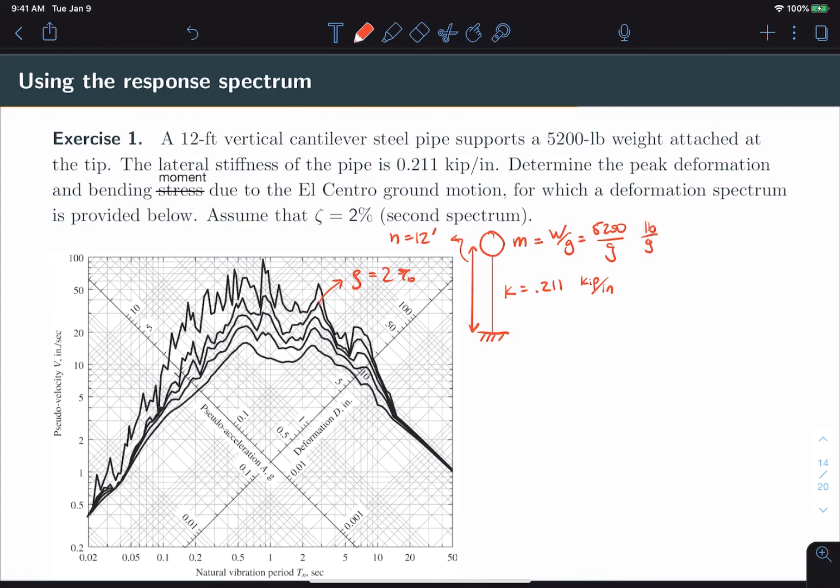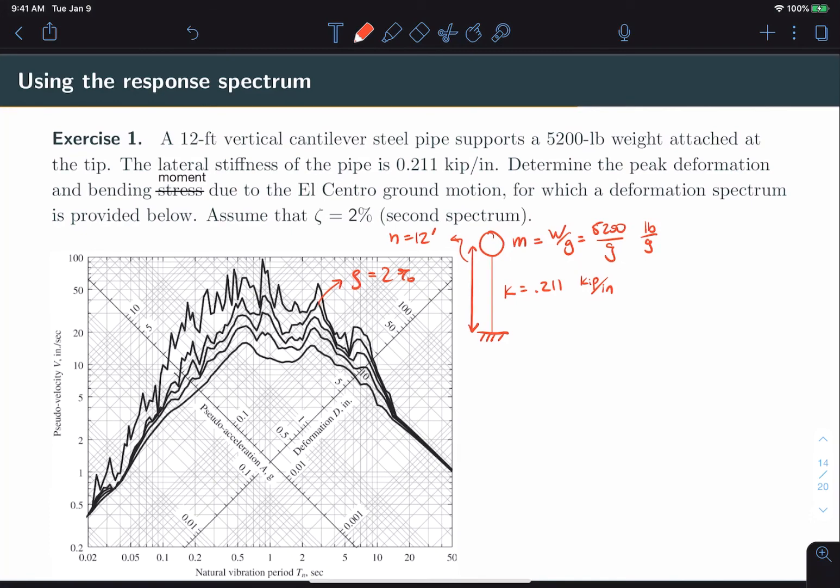All right, so we'll start by determining the natural frequency and then the natural period. Now, we will use a value of g equal to 386 inches per second squared for the acceleration of gravity. And so, omega n is equal to the root of k over m. This gives us a value of 3.96 radians per second. That means our natural period is 2π over omega n. And that is 1.59 seconds.